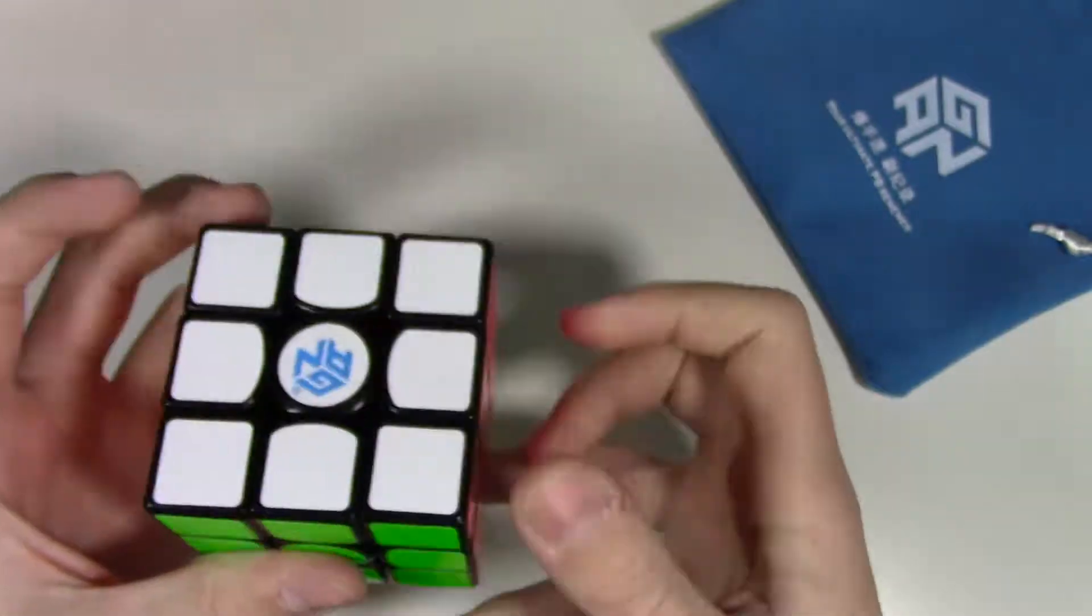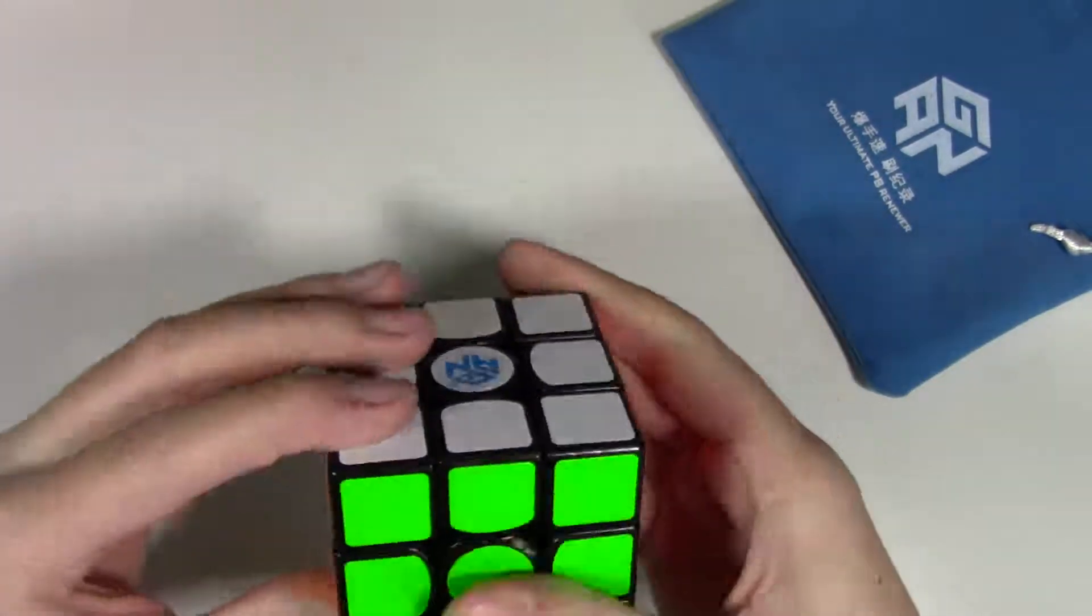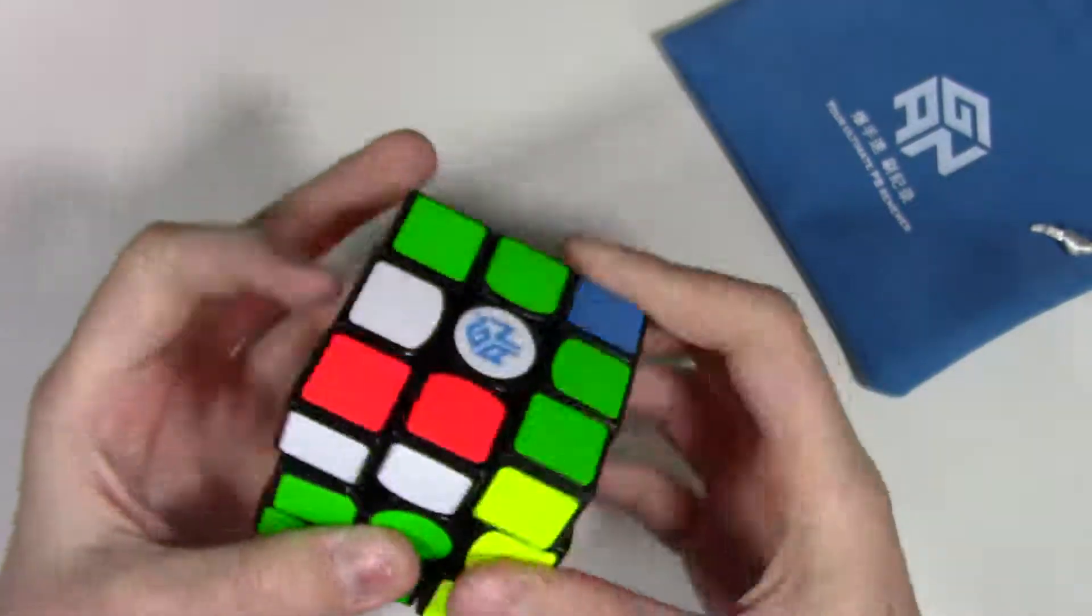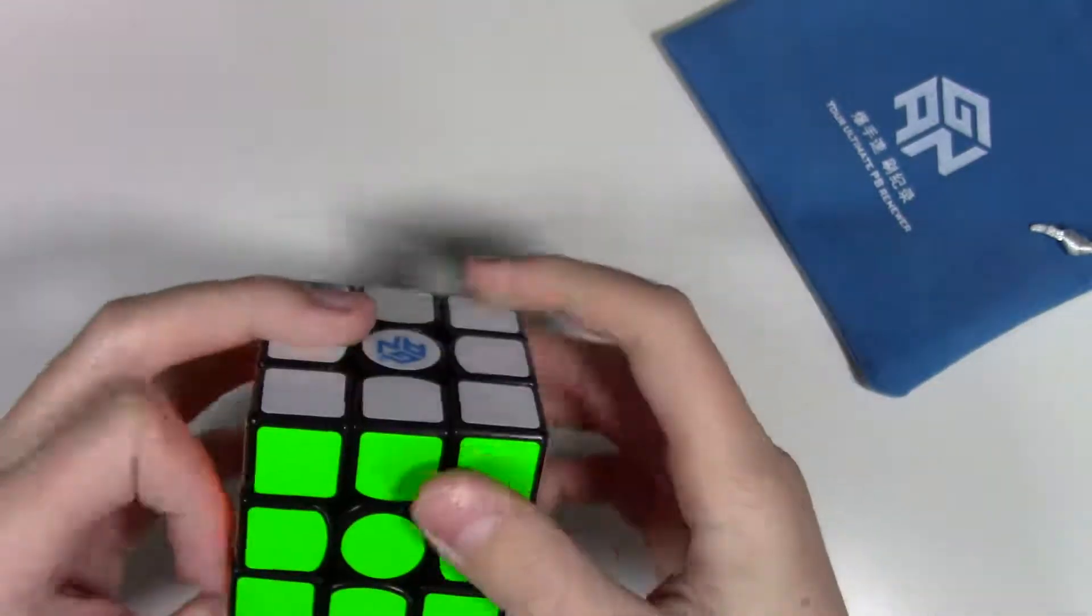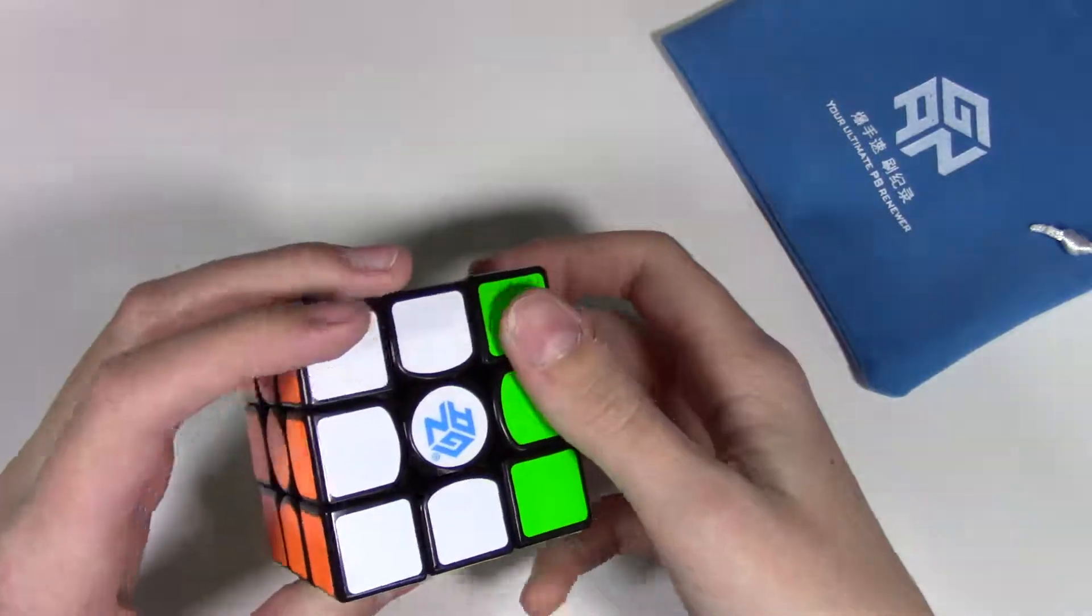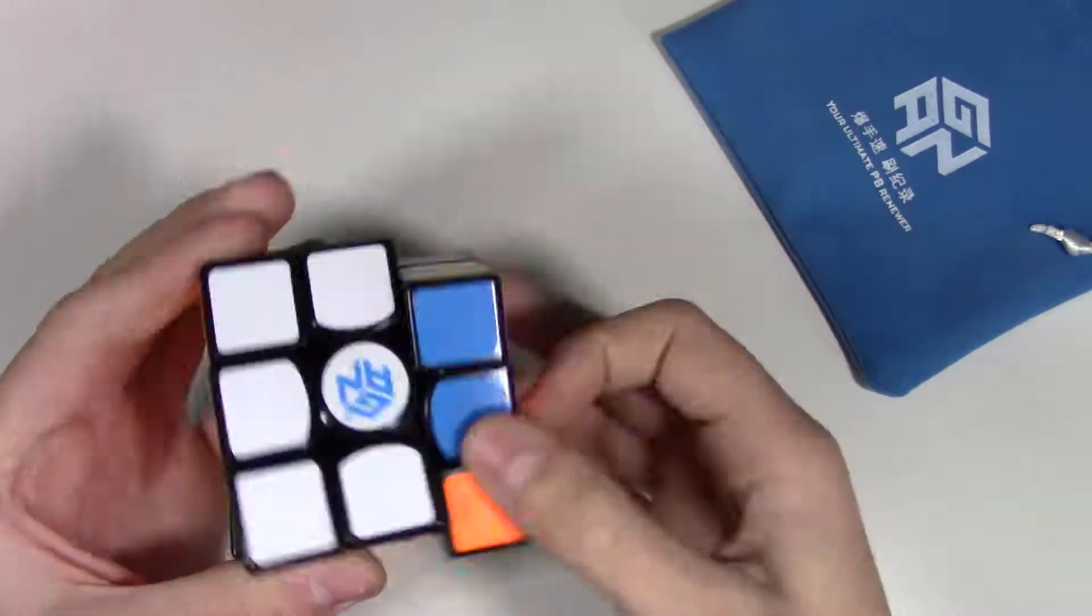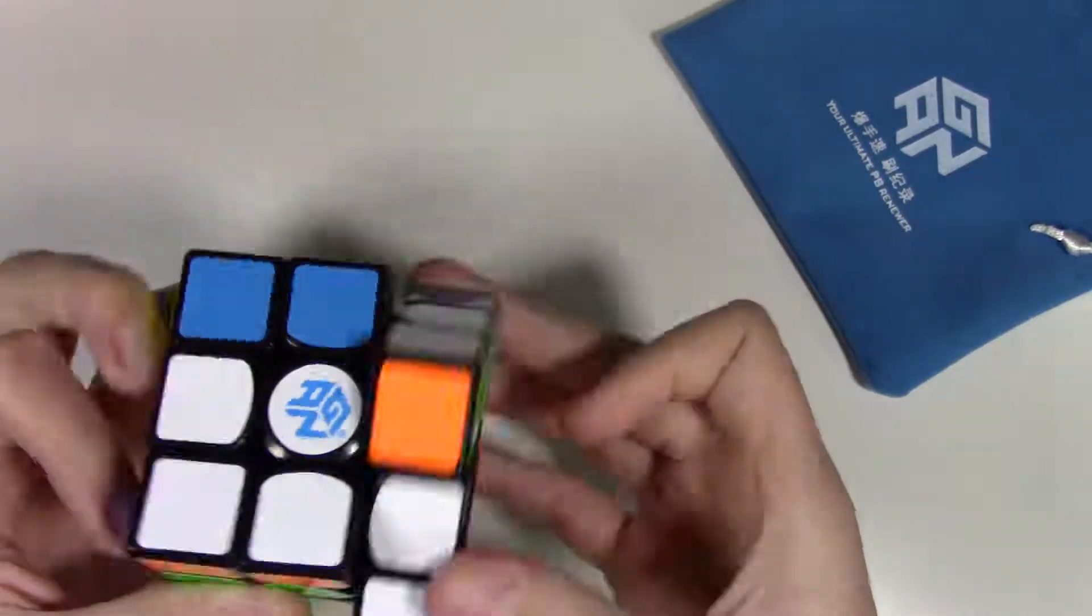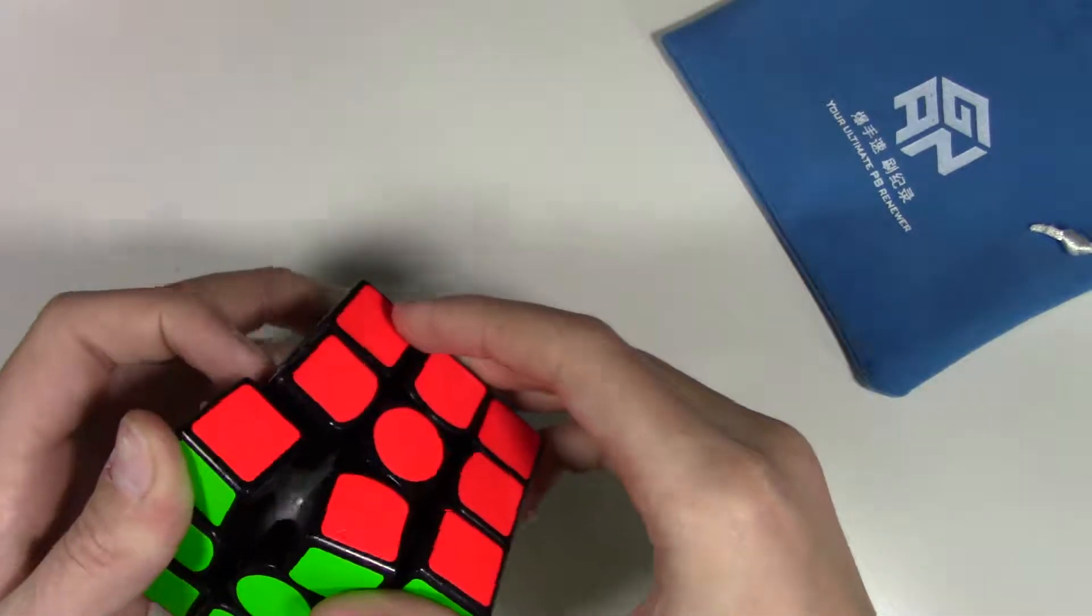Like, it looks really fast on screen, but it's really controllable. The magnets are actually pretty strong. They're a lot stronger than the GTS 2 M. And this cube actually feels a little dry, but at the same time, I don't think it needs to have any more lube.